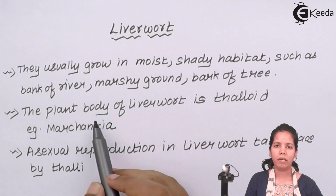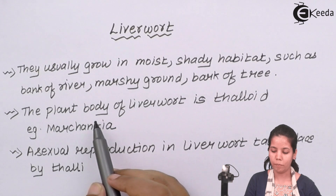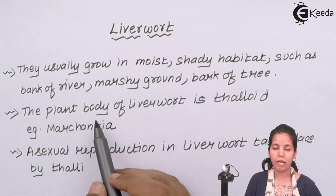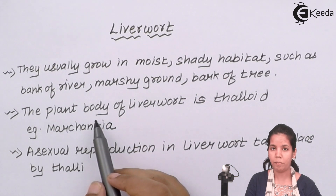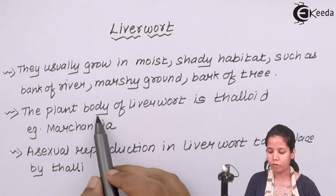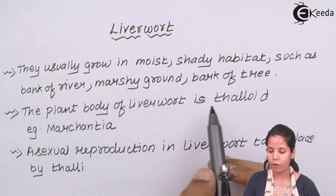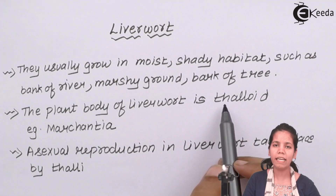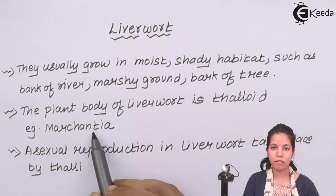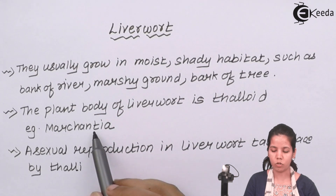They don't have a specific body differentiation and are irregular in structure. They prepare their own food at certain times and sometimes they are saprophytic, that is dependent on another plant. The plant body of Liverworts is thaloid in nature, that is irregular in form. An example is the Marchantia species.